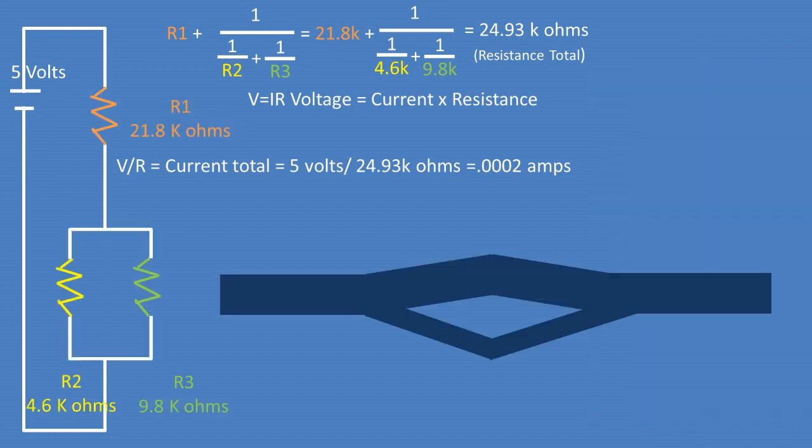For this next step, we need to think of current as if it is water in a river. If there is only one path for the water or current to go, the total volume of water must flow through that path. That being said, resistor 1 has the total current going through it.